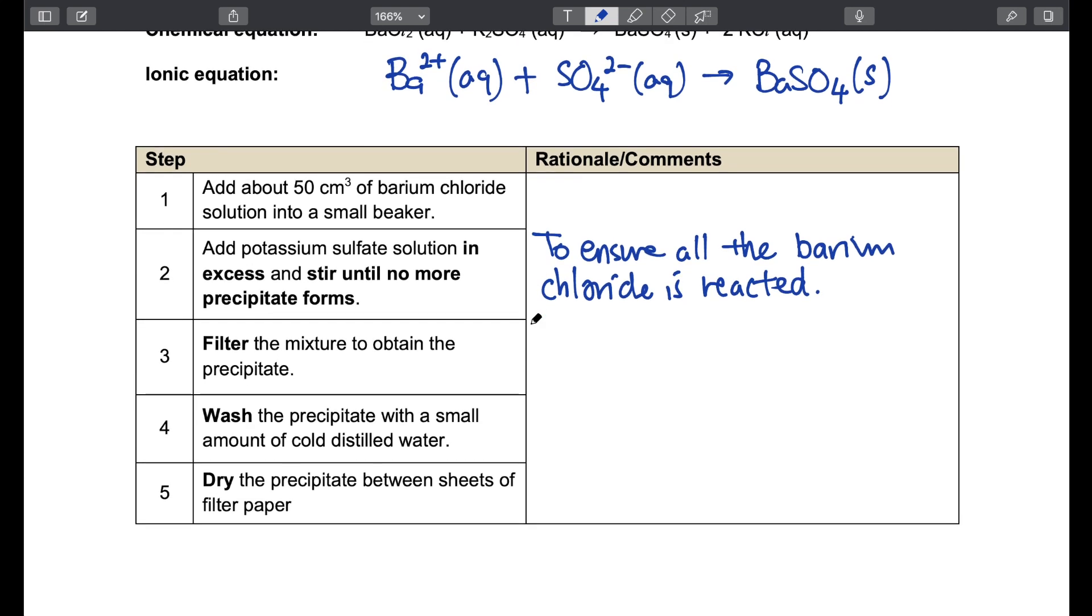The next step, we are going to filter the mixture to obtain the precipitate. Then wash the precipitate with a small amount of cold distilled water. This step helps to remove any impurities. And we dry the precipitate between sheets of filter paper because filter paper is highly absorbent.